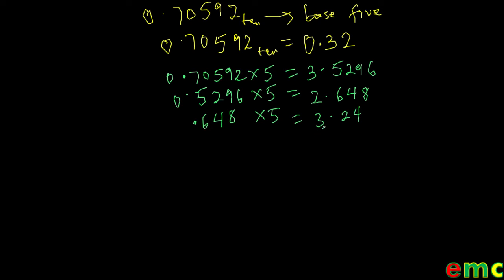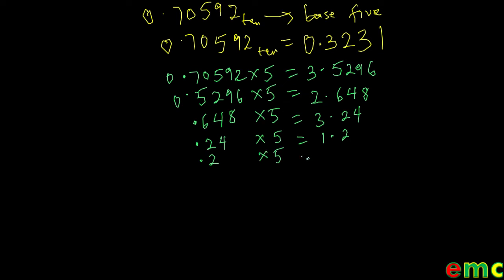Bring out the whole number, which is 3, and multiply the rest — 0.24 — by 5 once again, because 5 is the new base we are converting to. 0.24 multiplied by 5 gives you 1.2. Bring out your 1. Multiply the rest — 0.2 — by 5. If you multiply 0.2 by 5 it gives you 1, which is a whole number.